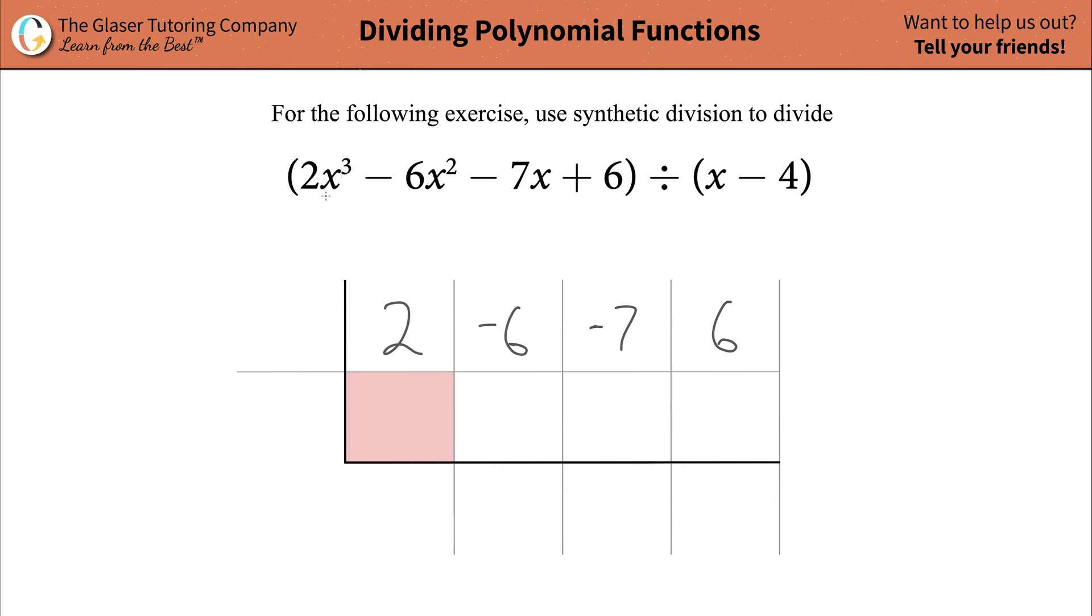Now, if it didn't go x cubed, x squared, x, and then constant, if one of those terms was missing, all you would have done was plug in a 0 in that particular column. Alright, easy peasy.